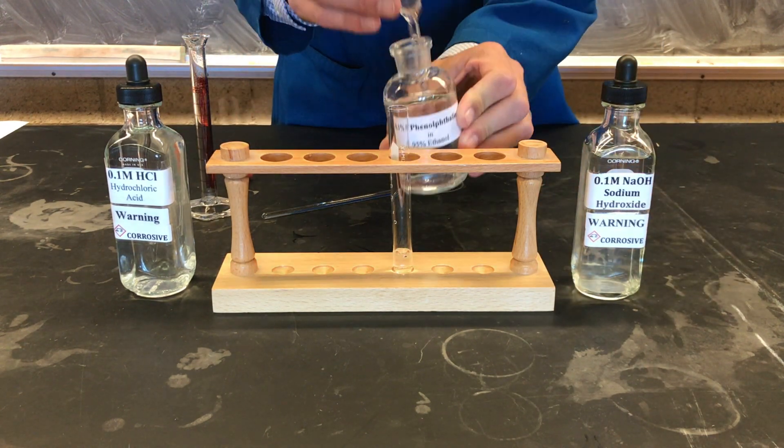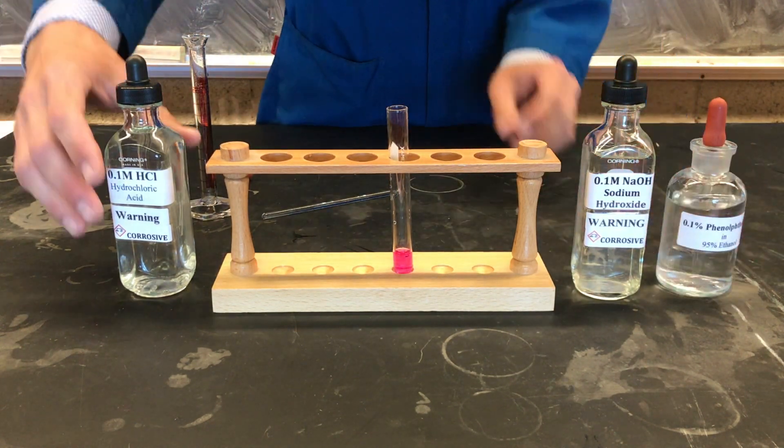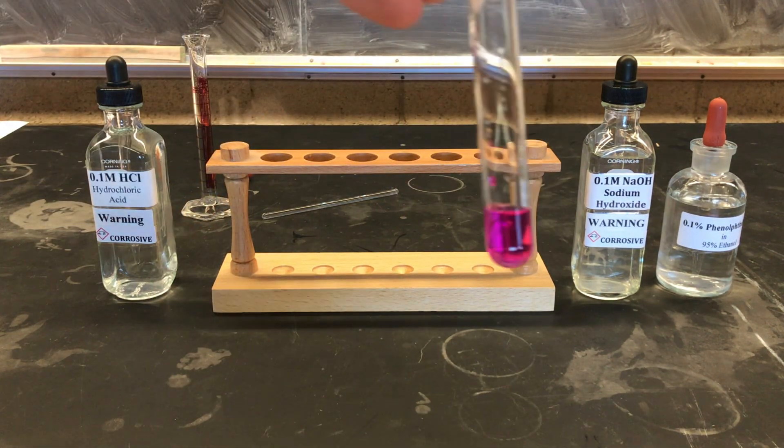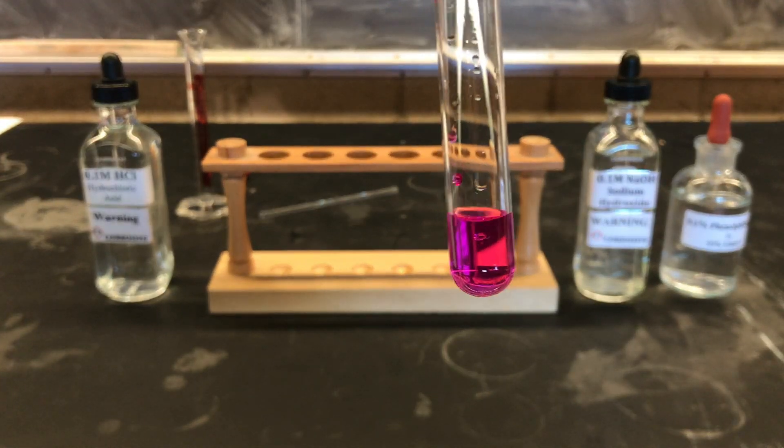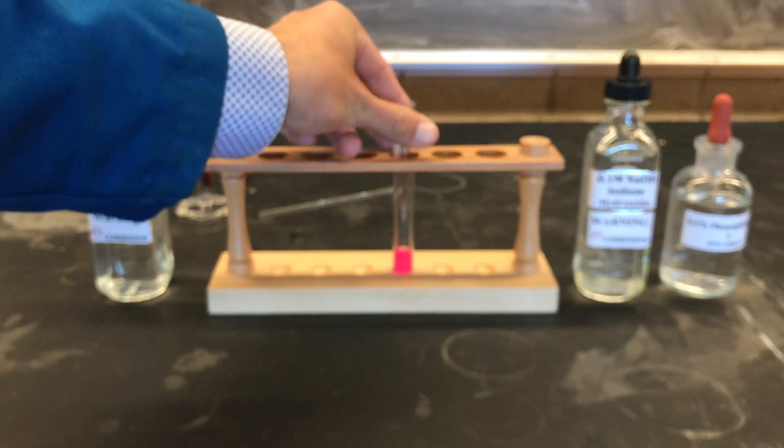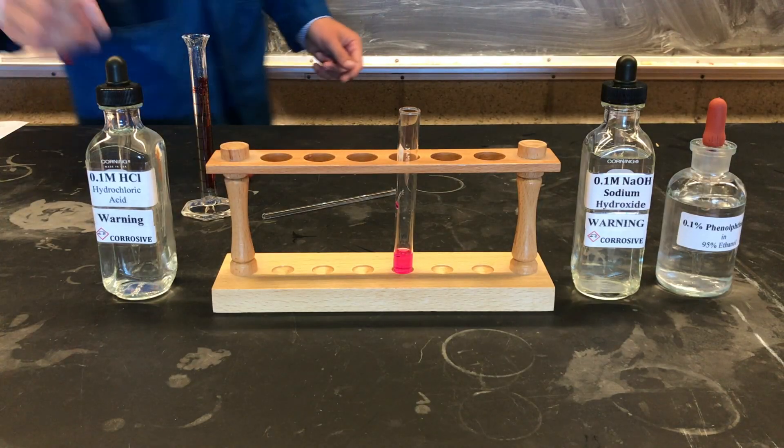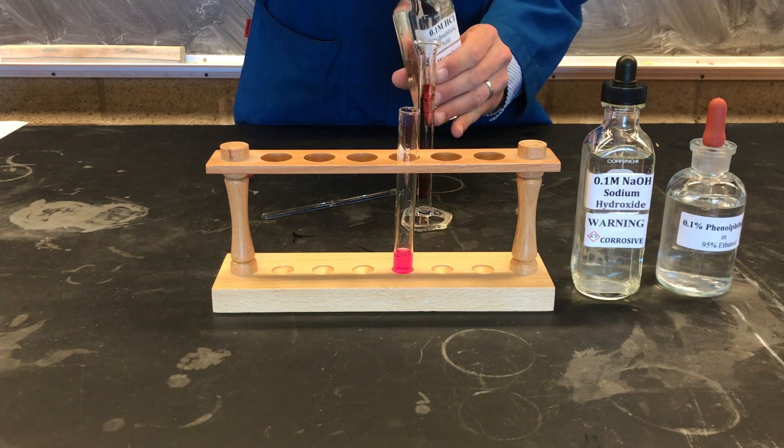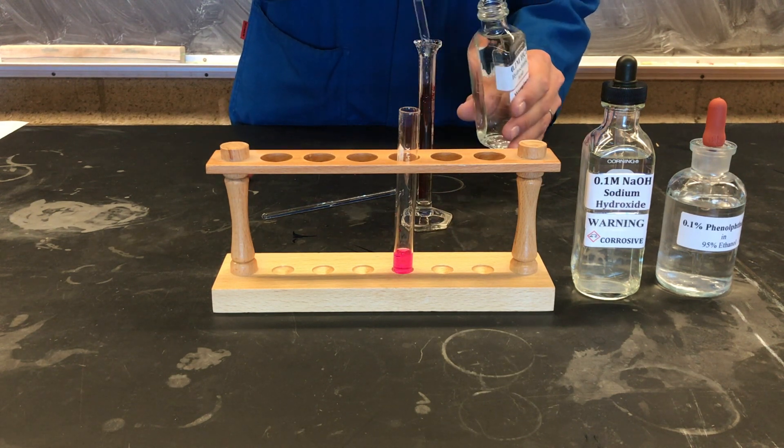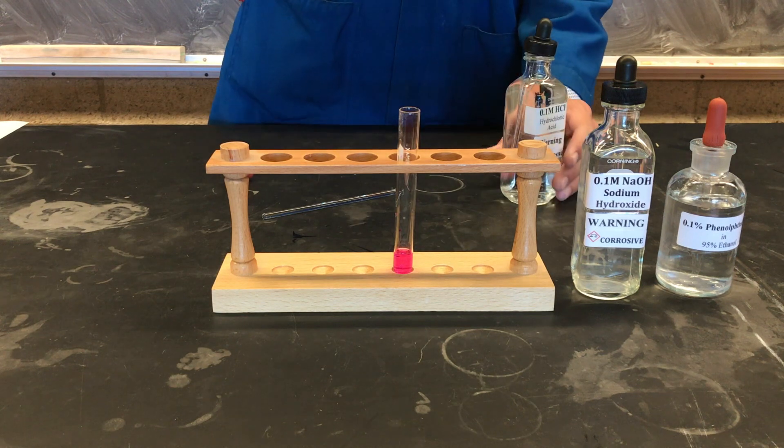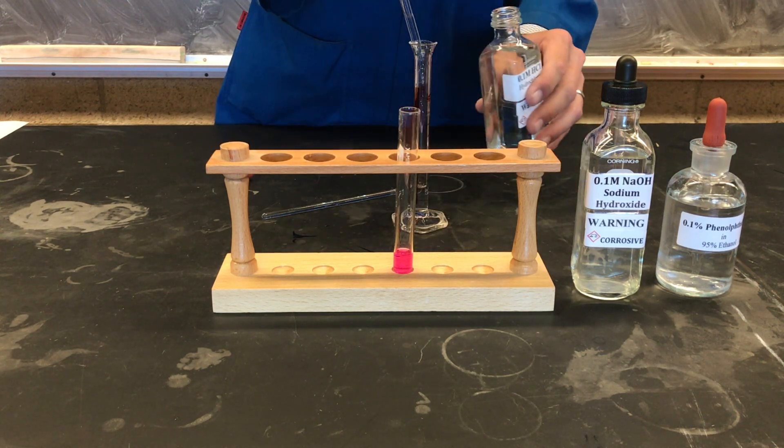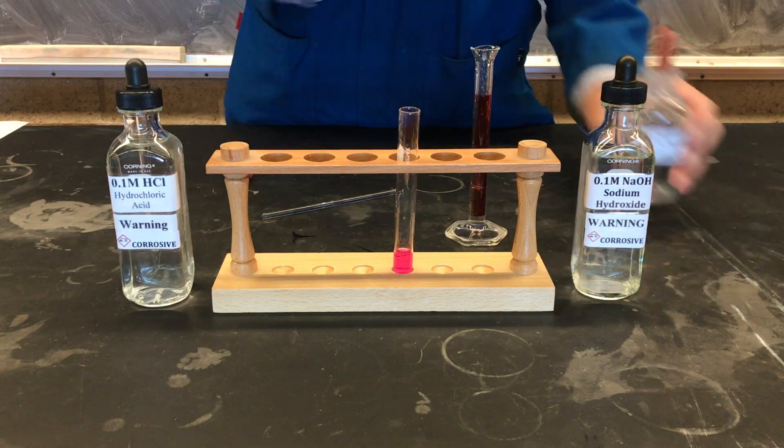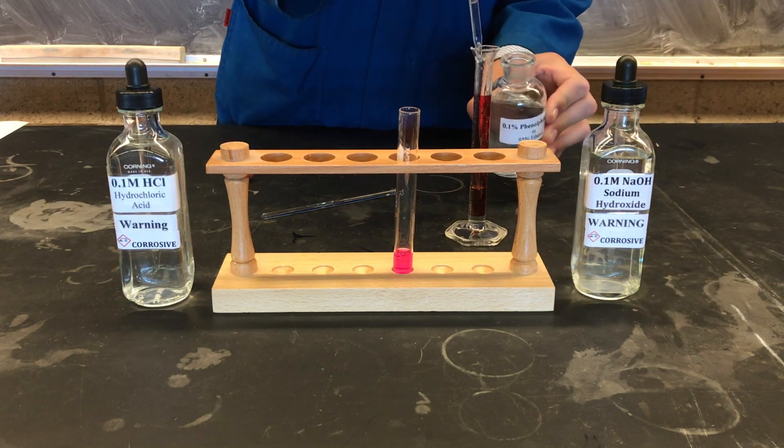We'll add 2 drops of our phenolphthalein indicator to our sodium hydroxide. After cleaning our graduated cylinder, we'll add about 3 ml of our hydrochloric acid solution and again add 2 drops of our phenolphthalein indicator.